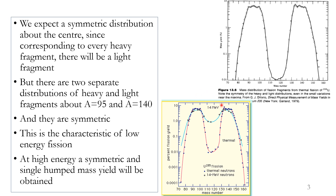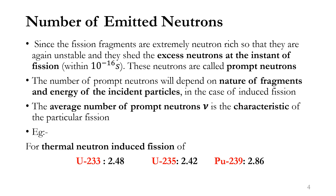This is the characteristic of low-energy fission. The second peculiarity of nuclear fission is the number of emitted prompt neutrons. Since the fission fragments are extremely neutron-rich, they are unstable and out of the stability belt, so they shed excess neutrons at the instant of fission itself — within 10⁻¹⁶ seconds. These neutrons are called prompt neutrons.